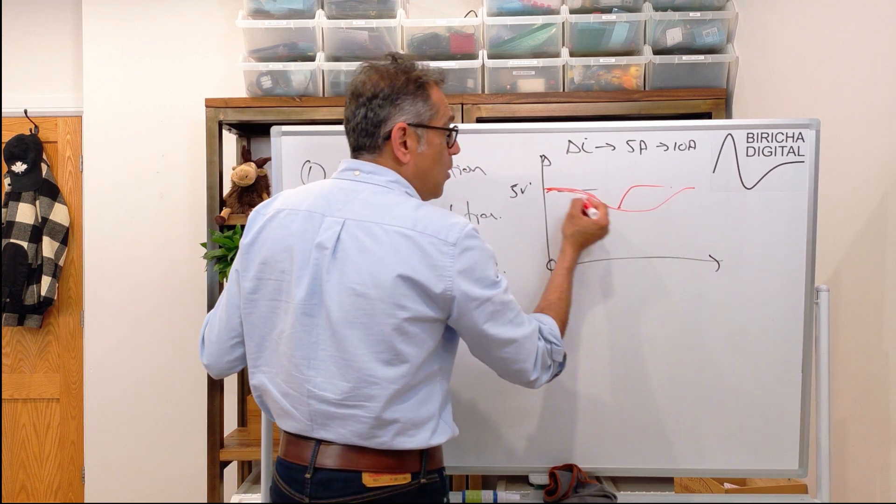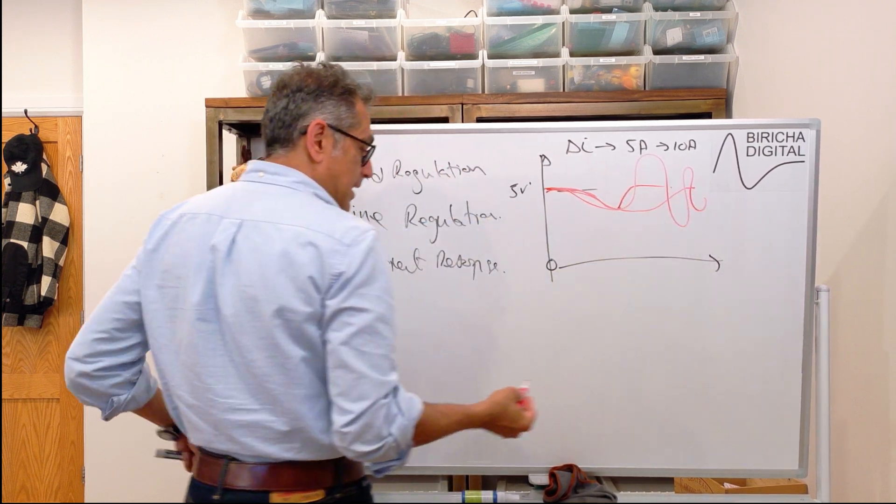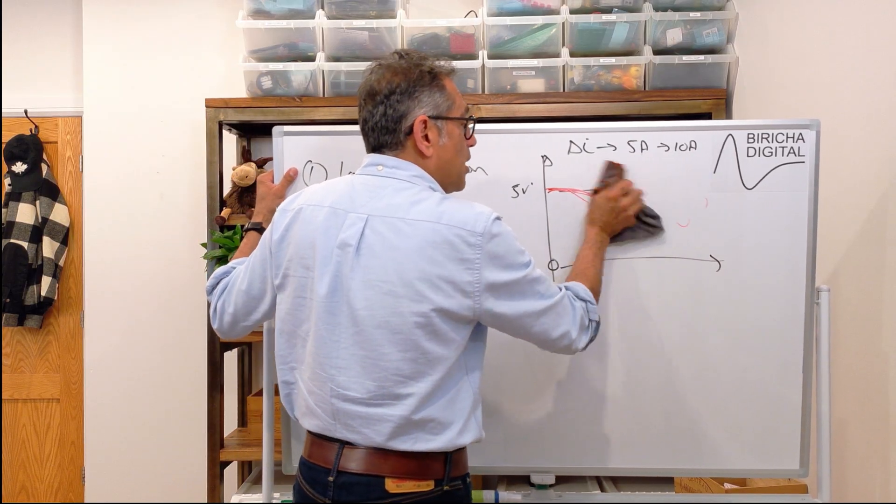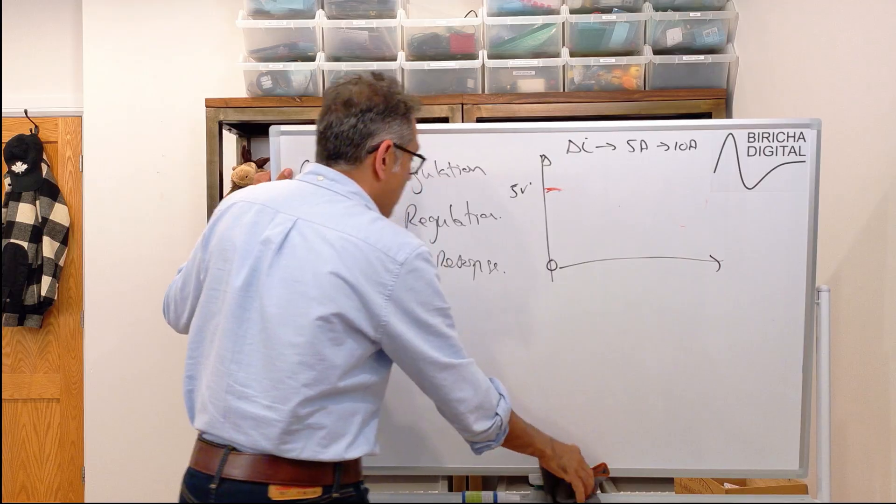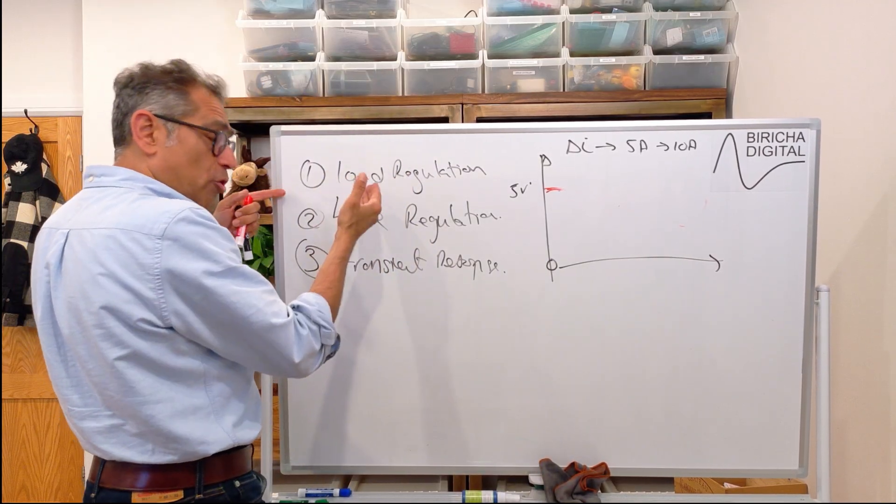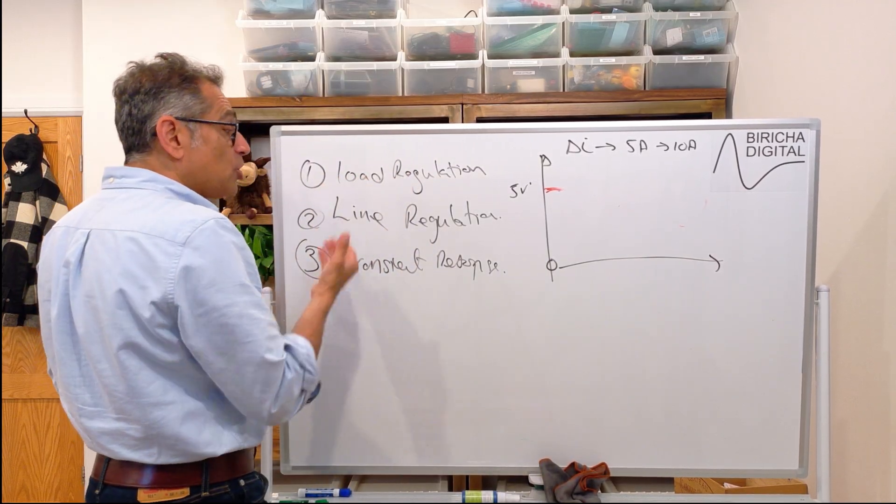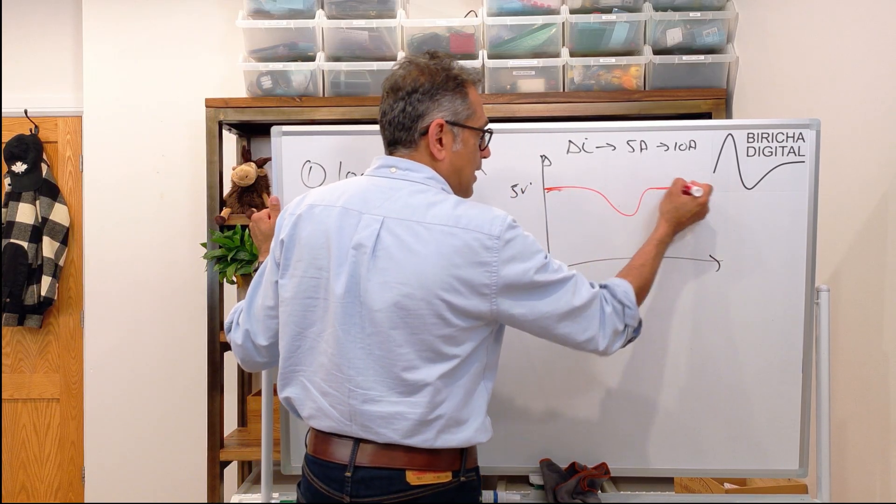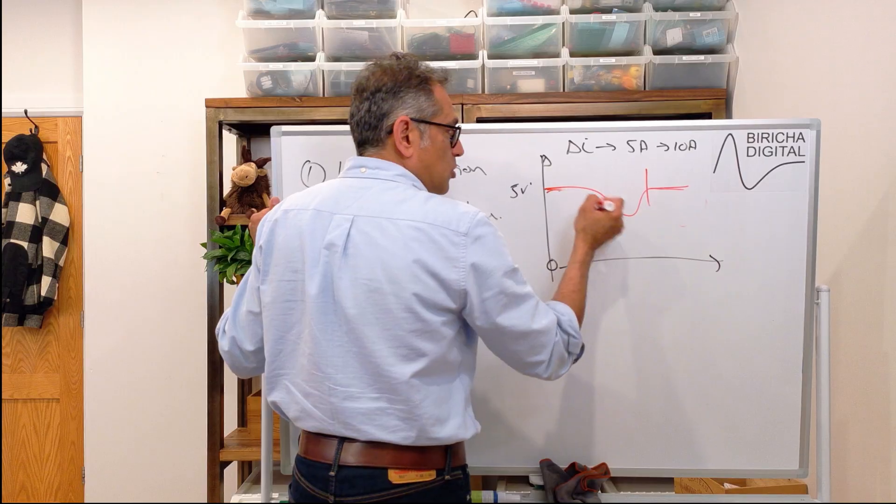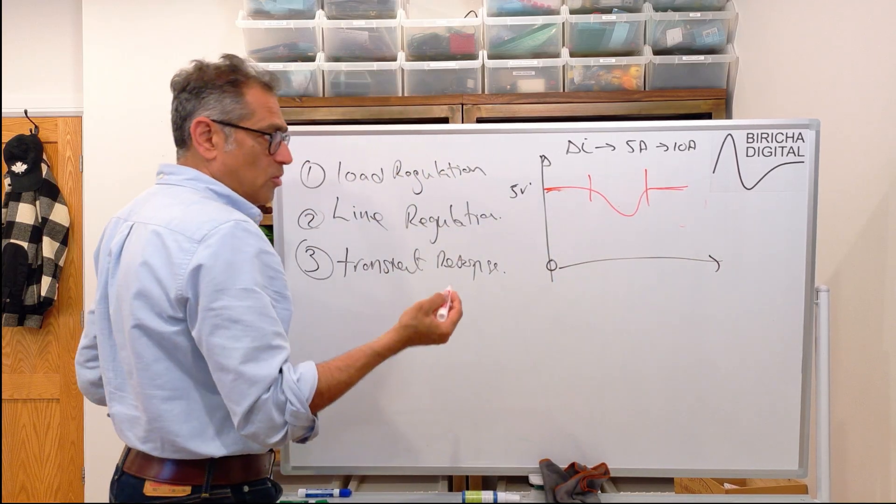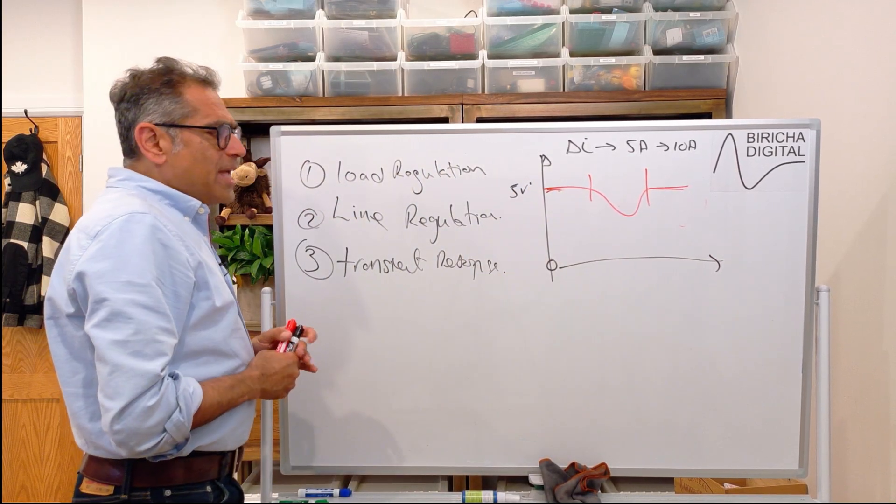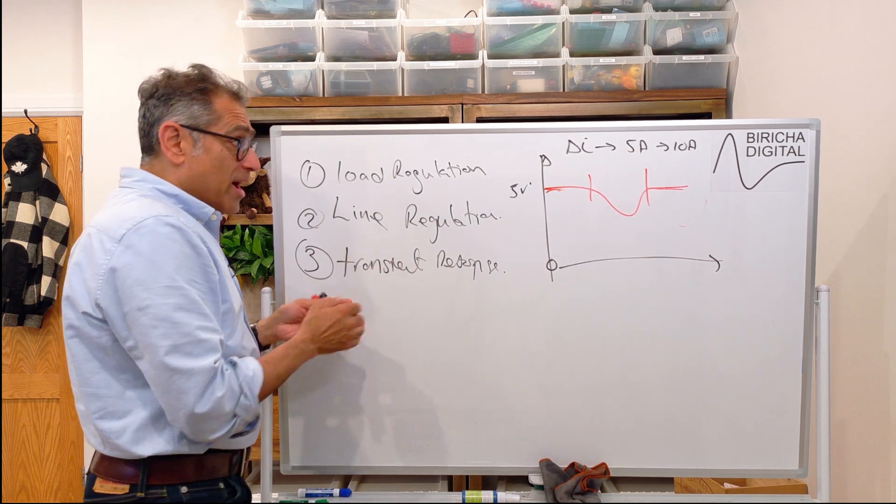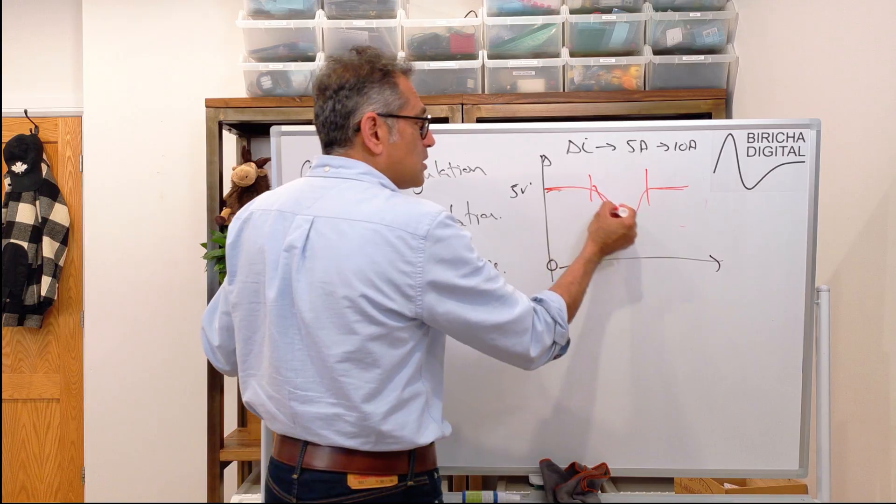So again, we need to design our control loop in such a way that in addition to giving us good load regulation and good line regulation, we also have a good transient response, which we want. Therefore we want to get to our nominal value as quickly as possible without any ringing.